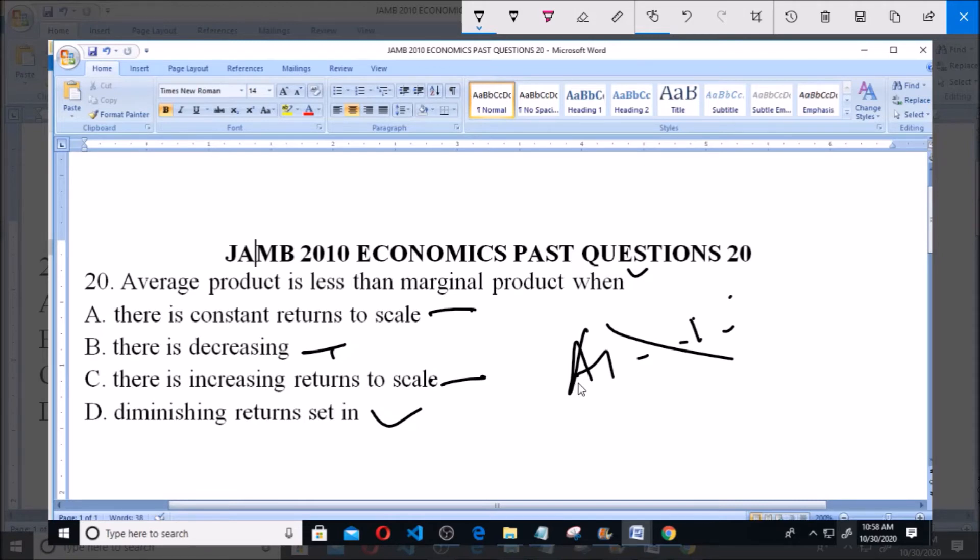But it will get to a point at which the addition of one more unit of the variable factor will result in less additional units of output. It's sometimes called the law of variable proportion.